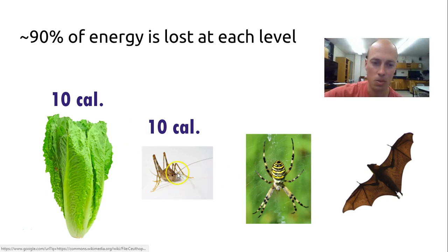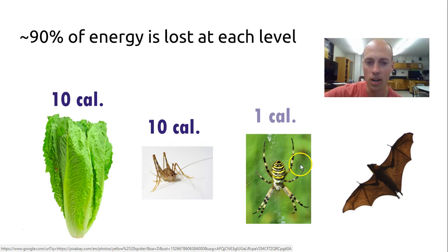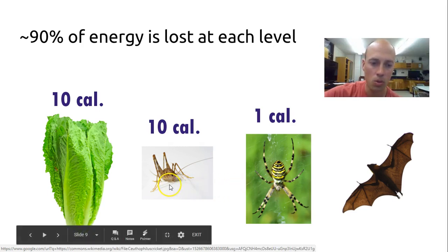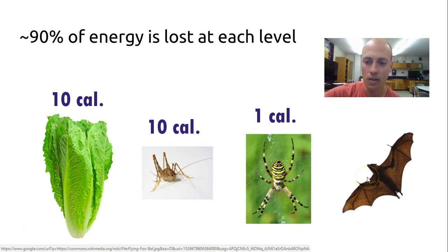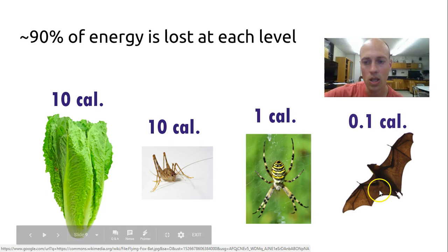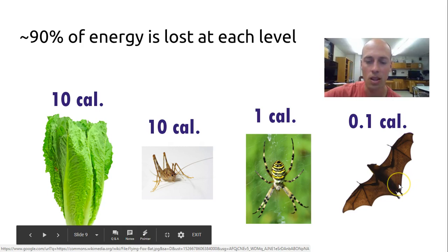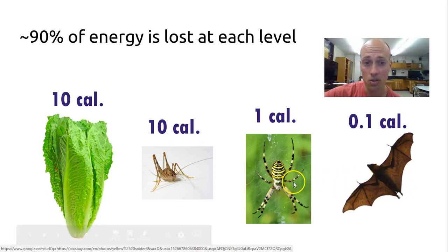So when a spider comes by and eats this cricket, or many of them, only 10% of the energy that it ate will go to the spider. Of that 10 calories, of which the cricket ate the whole 10 calories, only one of those calories would be transferred to the spider from that original lettuce. If a bat comes by and eats the spider, that lettuce has lost 90% at each level along the way, leaving only 0.1 calories of lettuce from that original lettuce to get to the bat. So bats need to eat a lot of spiders, spiders need to eat a lot of crickets in order to survive.